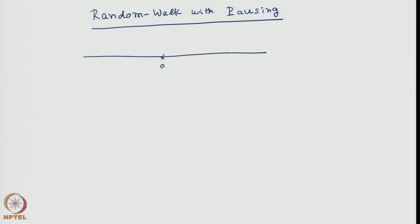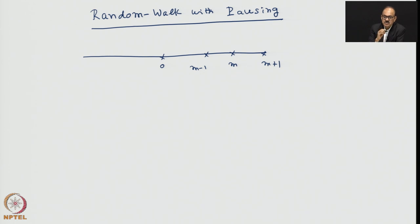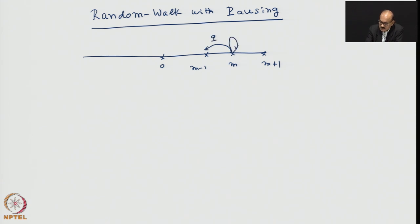As before, there is a random walker who starts from 0, and we work with nearest neighbor transition probabilities only. However, unlike the cases discussed thus far, when the walker decides to take a next step, it is not necessary that he transits either to the left or to the right — he could just stay where he is with some probability. So we now have three possible transitions: probability q to the left, probability delta to stay, and probability p to the right at each step.